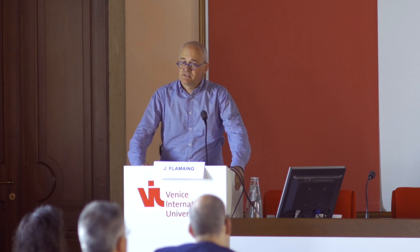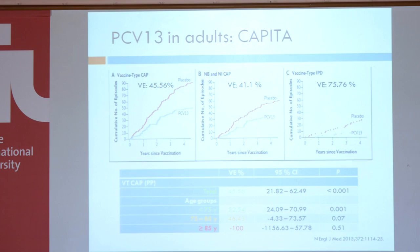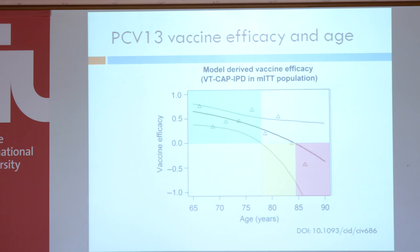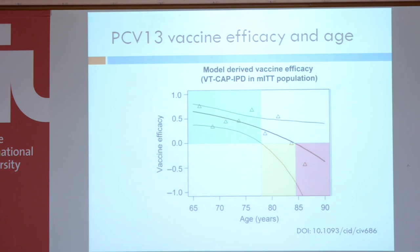This effect is not uniform in all age groups, and mainly in the oldest old the effect is waning away. We don't know if this is a true failure of the vaccine in that population or whether this population was just underrepresented. There is no hard evidence for an effect from the age of 75 and certainly over 85. Studies show that until around age 77 there may be that effect from the CAPITA trial, but over that age it becomes less and less effective.